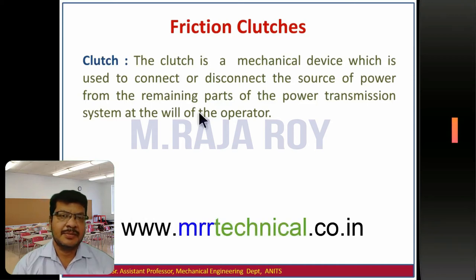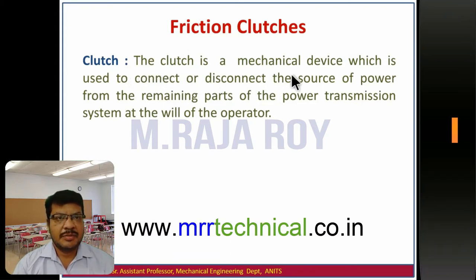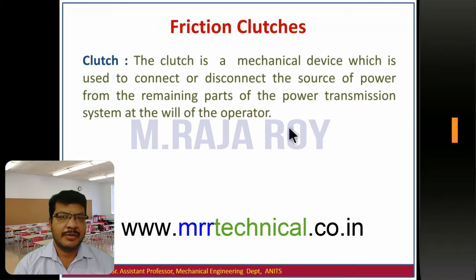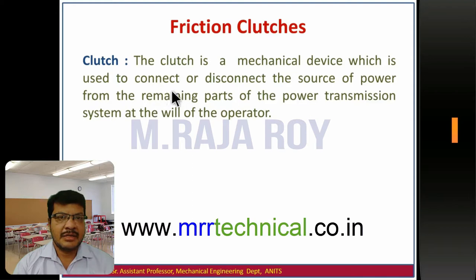Dear students and friends, in this video I am going to explain about friction clutches. The clutch is a mechanical device which is used to connect or disconnect the source of power from the remaining parts of the power transmission system at the will of the operator. For example, in the automobile case, the operator is the driver. Using the clutch, the driver can engage or disengage the engine from the gearbox while shifting the gears. That is the purpose of using a clutch.